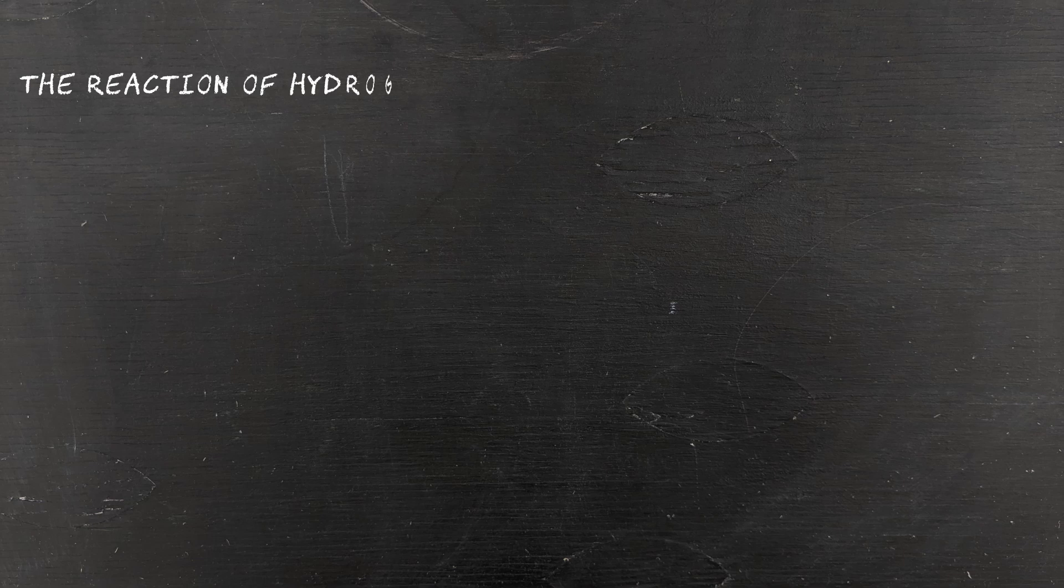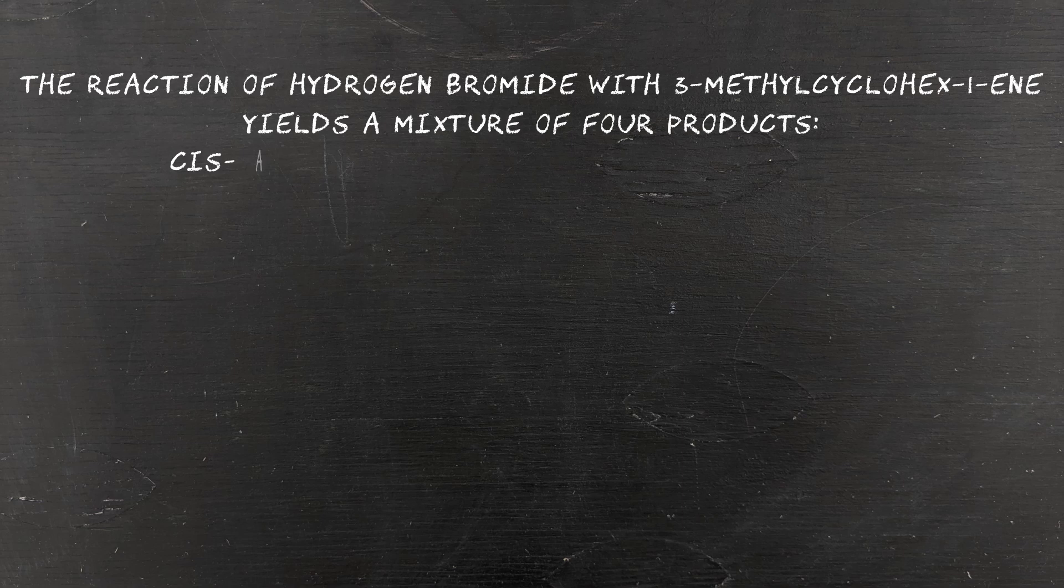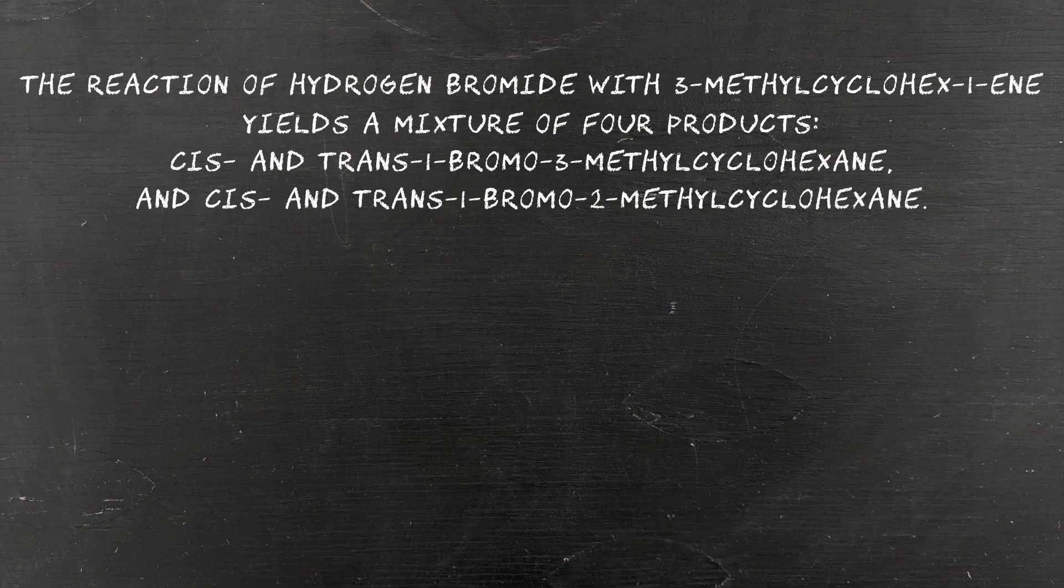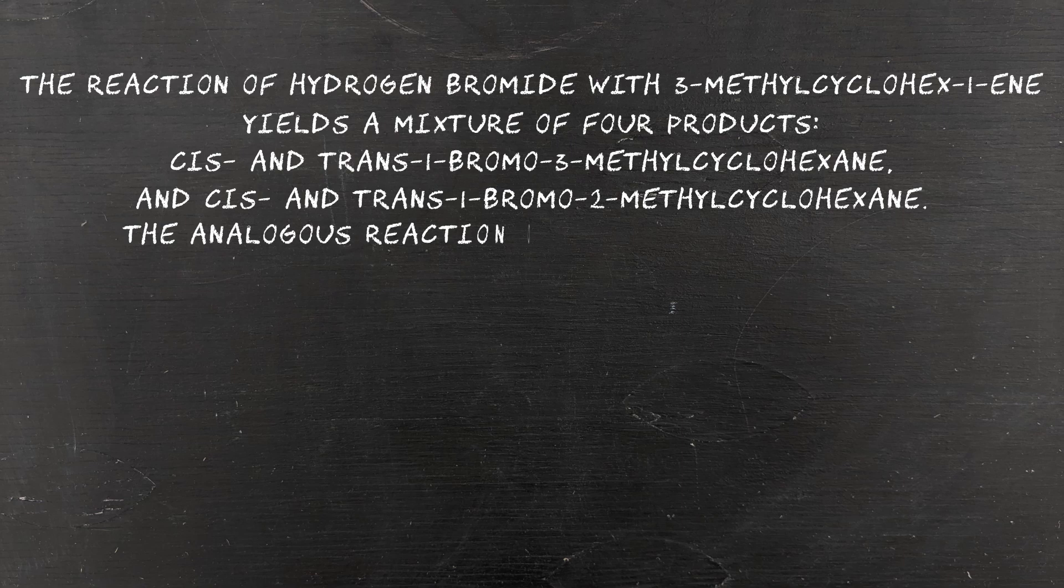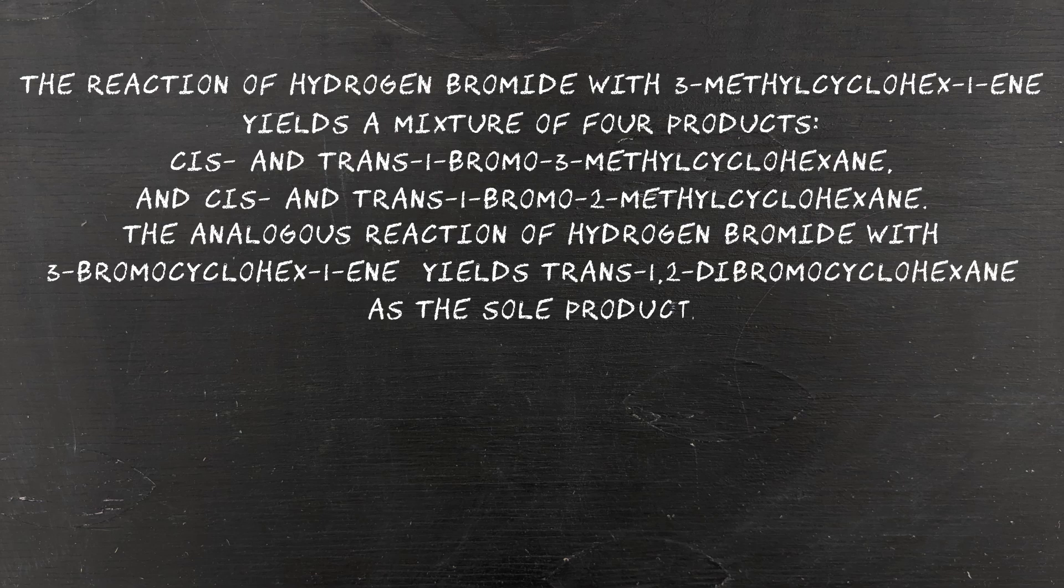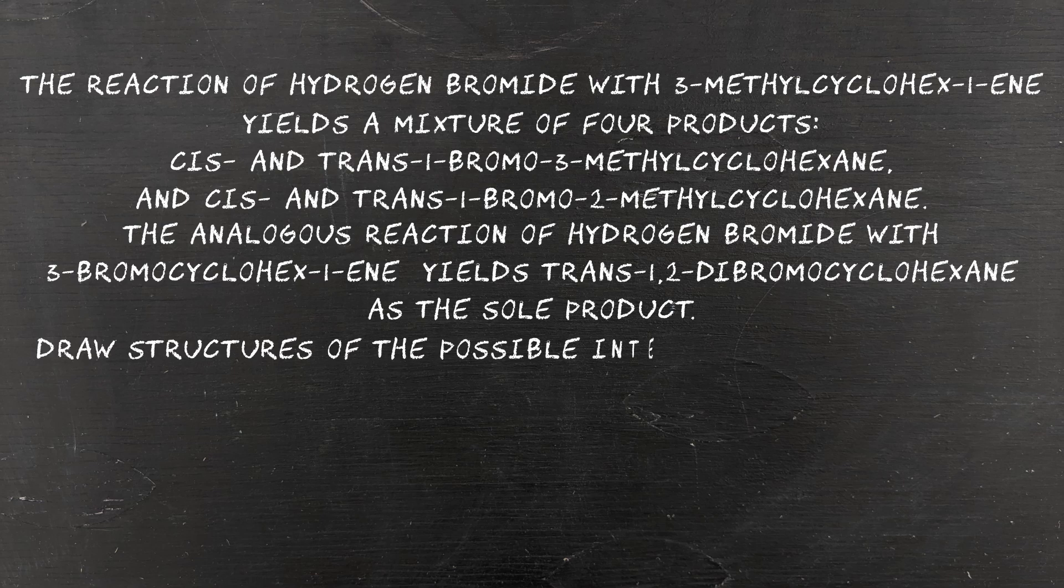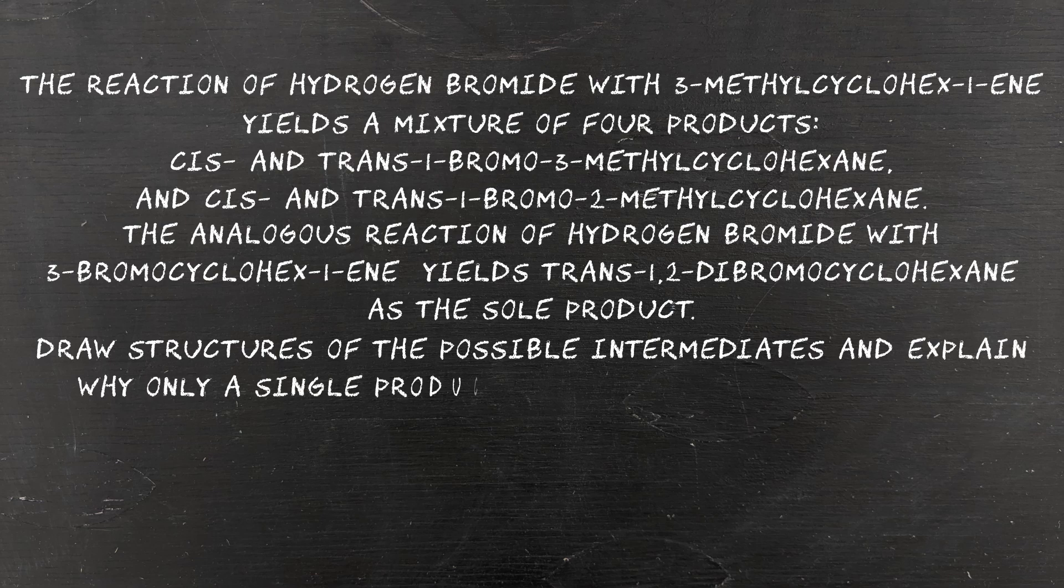Now with this idea in mind, we're going to move on to the next level of this question, which is actually the question that inspired this video. The reaction of hydrogen bromide with 3-methylcyclohex-1-ene yields a mixture of four products: cis and trans 1-bromo-3-methylcyclohexane, and cis and trans 1-bromo-2-methylcyclohexane. The analogous reaction of hydrogen bromide with 3-bromocyclohex-1-ene yields trans-1,2-dibromocyclohexane as the sole product. Draw structures of the possible intermediates and explain why only a single product is formed from the reaction of hydrogen bromide and 3-bromocyclohex-1-ene.